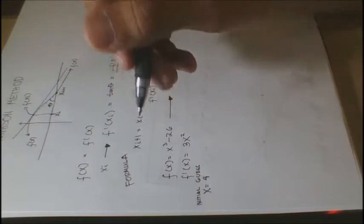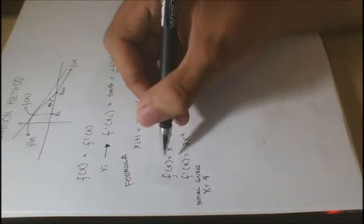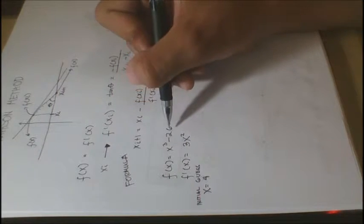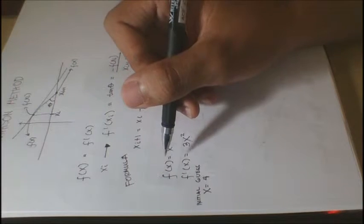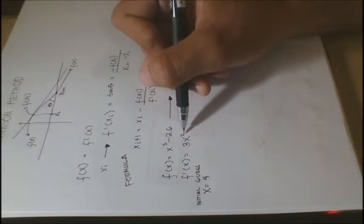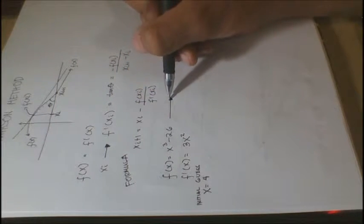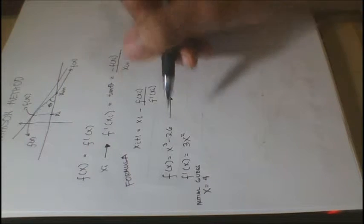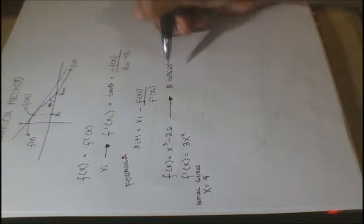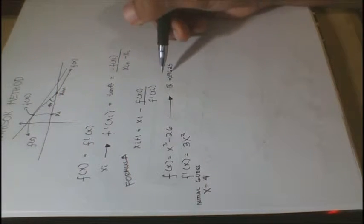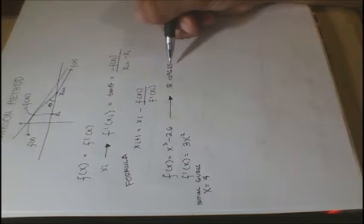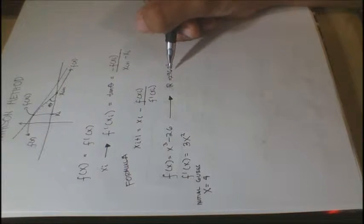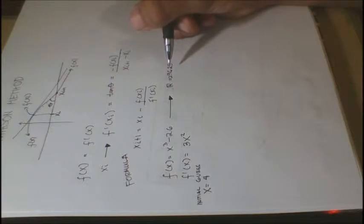So, for example, we have an equation f of x which is equal to x cubed minus 26. The derivative of this function is equal to 3x squared. Let's use the real root of this function as our reference for getting the root using the Newton-Raphson method. So, its real root is approximately 2.9625.